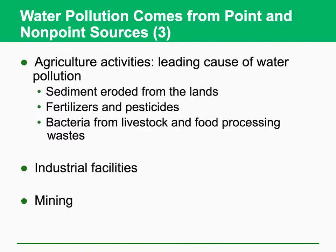Agricultural activities can lead to water pollution, and this is one example of non-point source pollution. In these places, sediments are eroded from the land, and there are fertilizers and pesticides which are required for agricultural activities. But if they come into water bodies, they are very bad water pollutants. Of course, there are bacteria from livestock and food processing waste, and they are problematic. Not only the bacteria but also organic matter can cause problems.